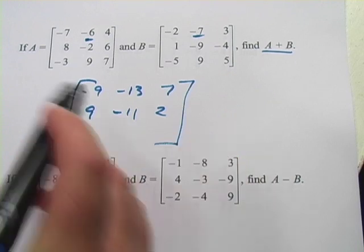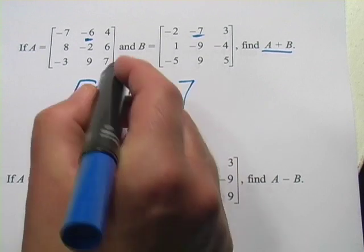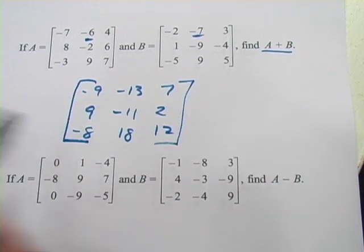And then the last row: negative 3 and negative 5 is negative 8, 9 and 9 is 18, and 7 and 5 is 12, and that is your answer for A plus B.